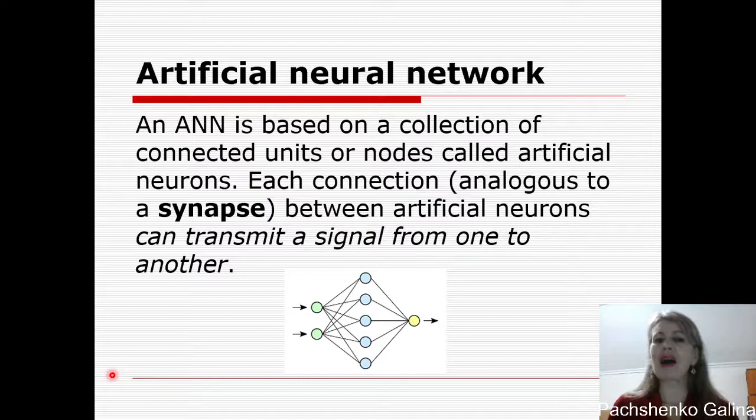An Artificial Neural Network is based on a collection of connected units or nodes called Artificial Neurons. Each connection, analogous to a synapse, between Artificial Neurons can transmit a signal from one to another.